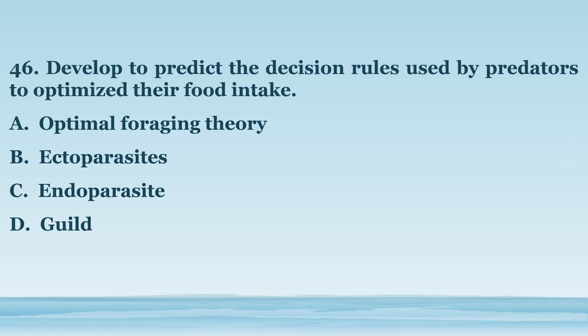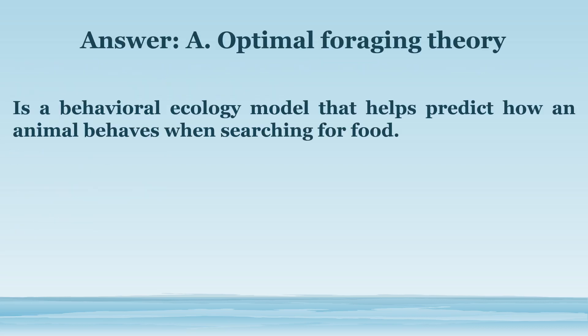Number 46. Developed to predict the decision rules used by predators to optimize their food intake. A. Optimal foraging theory. B. Ectoparasites. C. Endoparasite. D. Guild. The answer is letter A. Optimal foraging theory. Is a behavioral ecology model that helps predict how an animal behaves when searching for food.